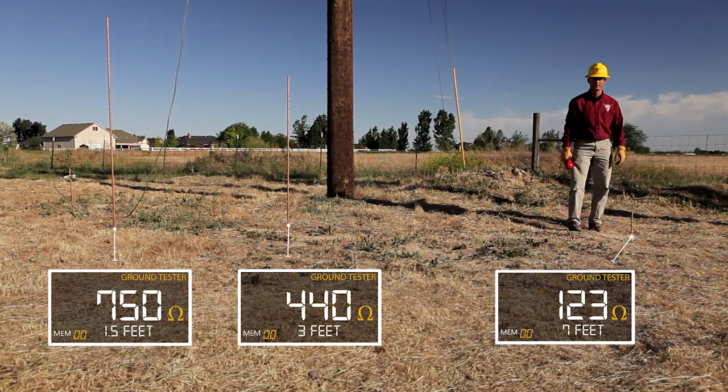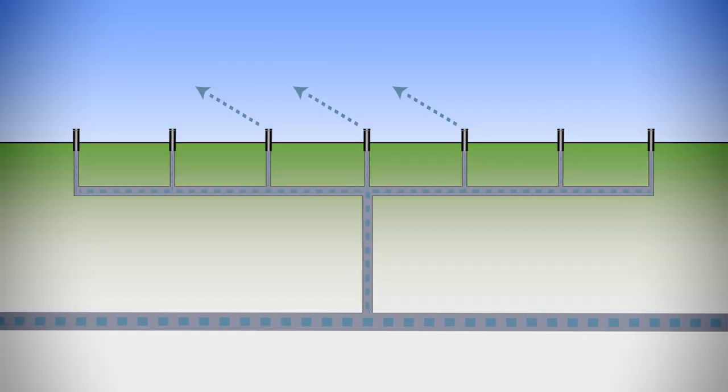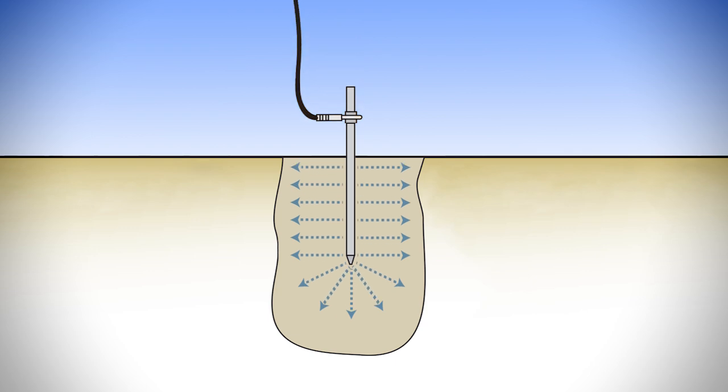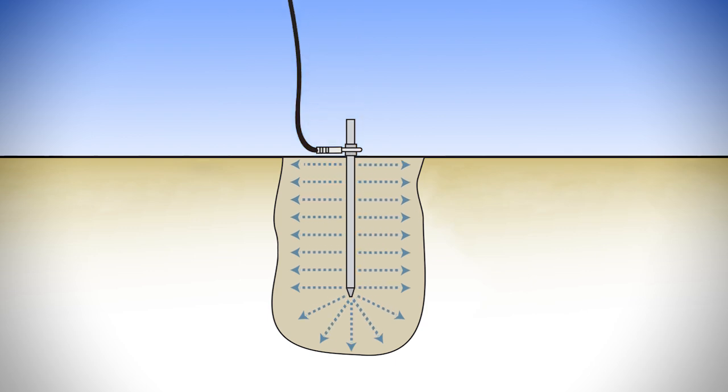As you can see, the deeper the ground rod is driven, the less resistance it has. Think of it like a sprinkler system spewing water from many different holes or paths. By penetrating the earth deeper, the ground rod provides more paths for the flow of electrons, resulting in less resistance. By doubling the rod's depth, you can reduce the resistance by 40%.